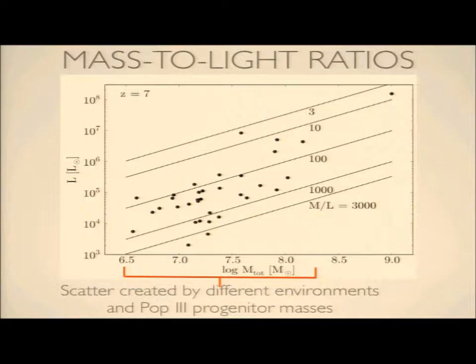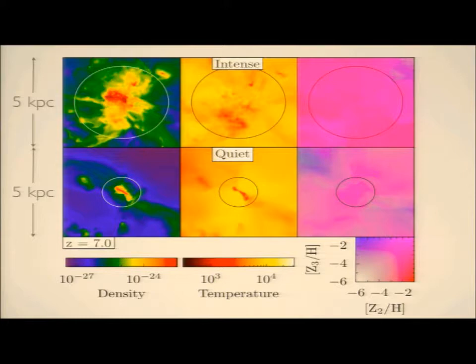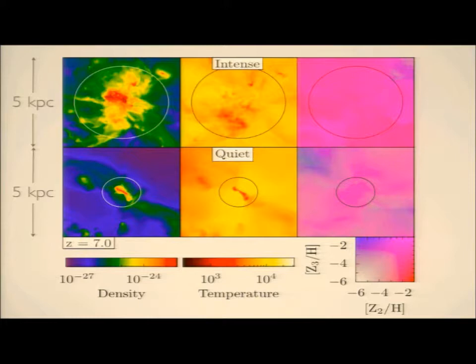I only have time to focus on the most massive halo, and we can take a closer look here. It has a very complicated gas structure. In its temperature plot we have these star-forming regions that have cooled by molecular hydrogen cooling down to around a thousand Kelvin. This is a composite plot of metallicity — the red is from Pop2 stars and the blue is from Pop3 stars. It's very well mixed; we don't see any metal-free gas inside of this galaxy, and it has roughly a mean metallicity of 10^-2 solar.